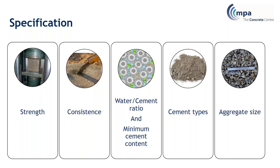The other thing you have to specify is the maximum aggregate size. The normal one is 20 millimetres. You can go for a larger aggregate size - normally 40mm maximum - if you have a large section of concrete, or you might go smaller, either 10 or 14 millimetres maximum aggregate size, if you have a narrow section or congested reinforcement. 20 millimetres is the recommended size, and if that's what you want, you don't actually need to specify it - only if you need to modify it.